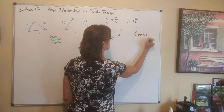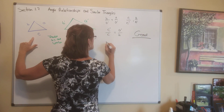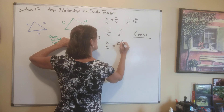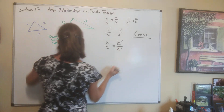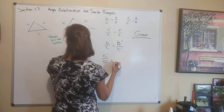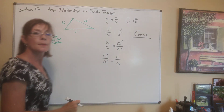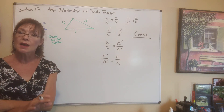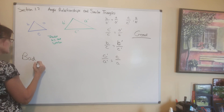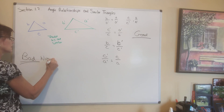We could also say B is to C as B prime is to C prime, or C prime is to A prime as C is to A. These are all good proportions. Here's an example of a bad proportion — this is not a true statement. Make sure you are not this inconsistent.